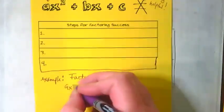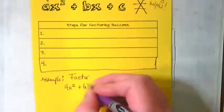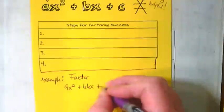We are going to factor 9x squared plus 66x plus 21.